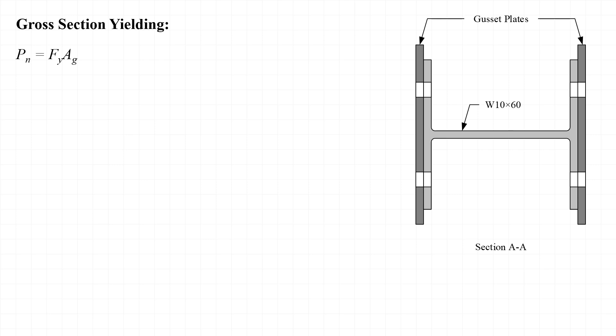There are two strength limit states that we need to consider. The first is gross section yielding, or tension yielding. The second is net section fracture, or tension rupture, as AISC puts it. We'll start off by examining the gross section yielding, where the nominal strength P sub n is taken as F sub y times A sub g — the yield strength of the material times the gross area of the section.